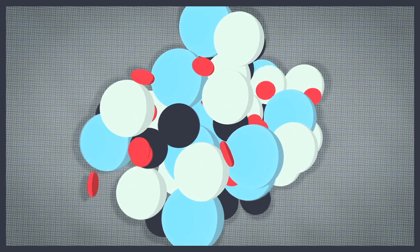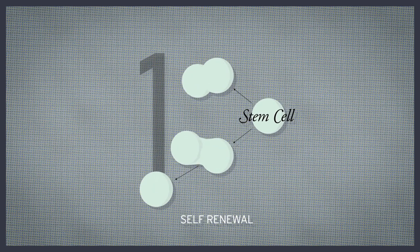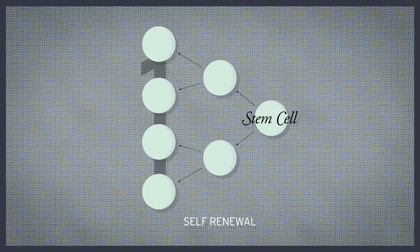These experiments revealed two defining properties of a stem cell. First, a stem cell must be able to self-renew. That is, it must be able to divide and give rise to more cells like itself.